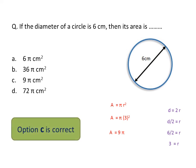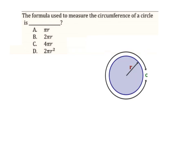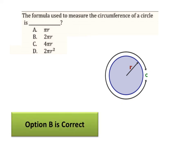Next question: which formula is used to measure the circumference of a circle? The circumference is the perimeter of a circle or ellipse. Imagine taking a dark thread and wrapping it around the edge of a circle, then cutting it and laying it straight — that straight line length is the circumference. The circumference formula is: C = 2πr. Option B is correct. Note: for area of a circle, the formula is A = πr².